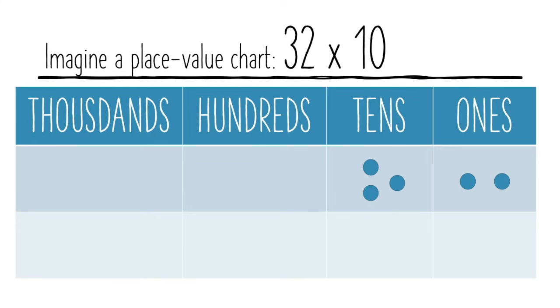When we multiply 32 by 10, we're making it 10 times bigger, which means that everything on our chart is going to shift to the left. Our tens become hundreds and our ones become tens.